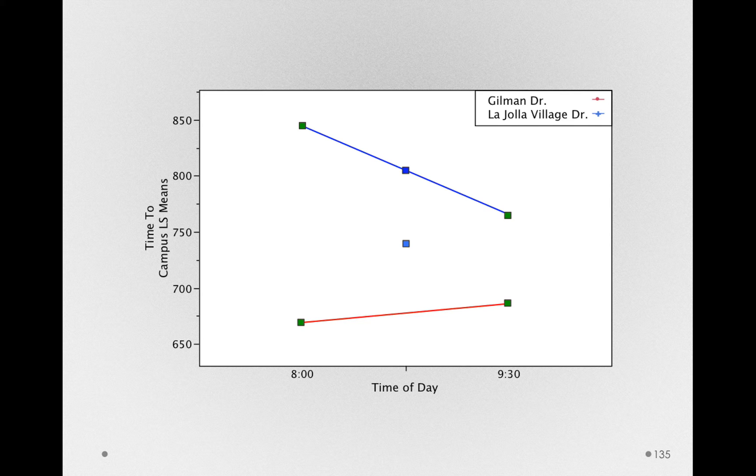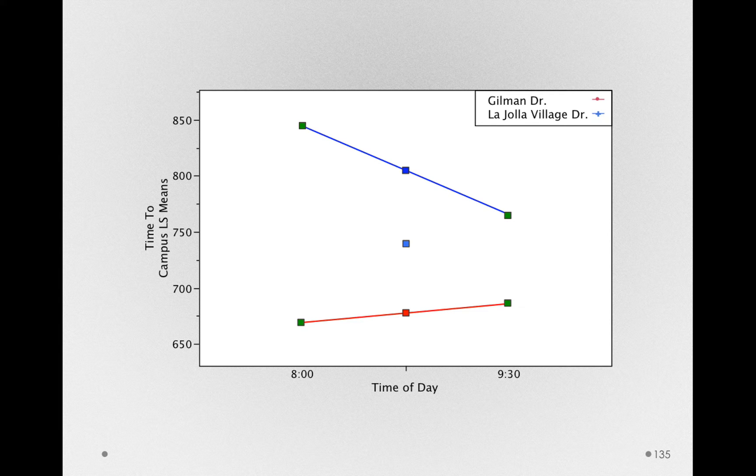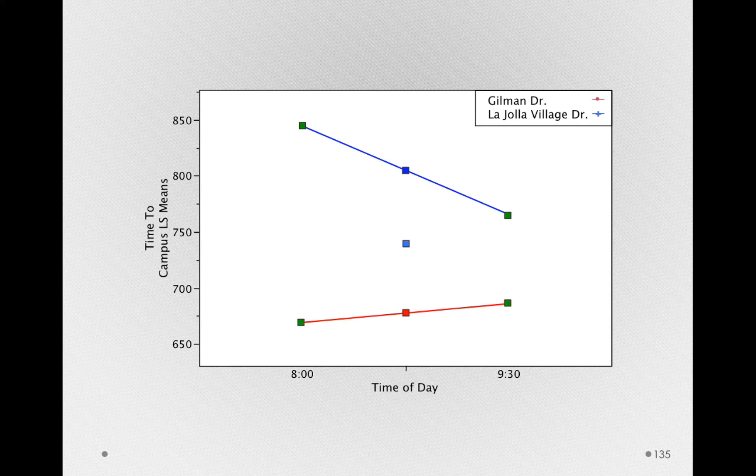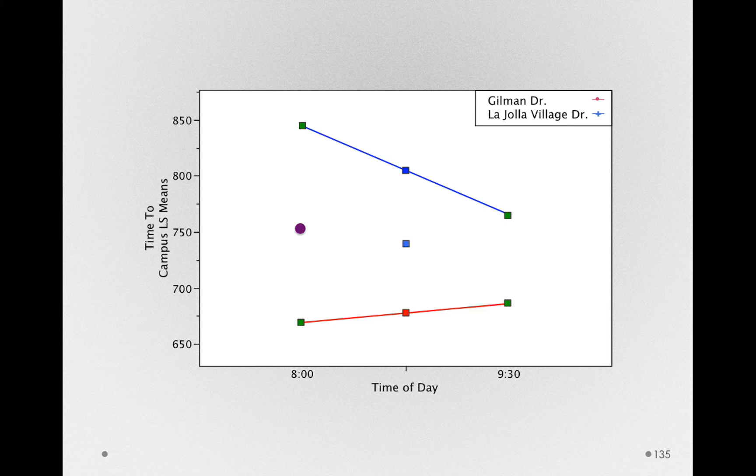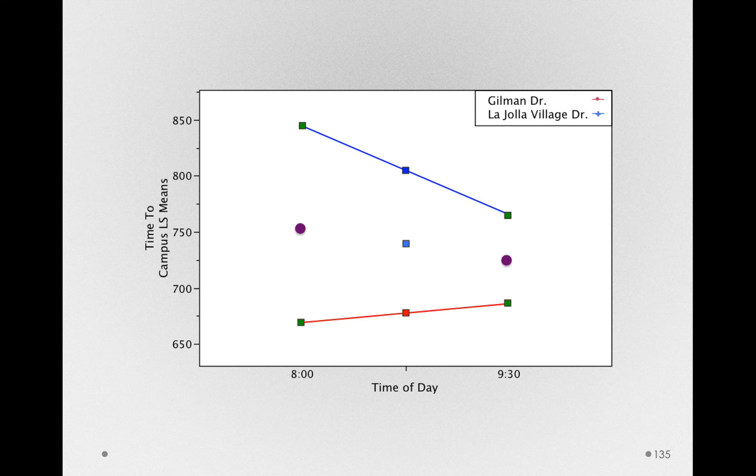Now, we also calculated the mean for La Jolla Village Drive and the mean for Gilman Drive. This was again found completely independent of a model. We can simply look at, ignoring time of day, what the average amount of time it took for me to get to campus was at La Jolla Village Drive and at Gilman Drive. In a similar way, we also could calculate, independent of our model, the overall average at 8am between the two routes and the overall average at 9:30am between the two different routes. These are calculable without any model. We're simply looking at just the 8am time points, finding the average, and looking at the 9:30am time points and finding an average.